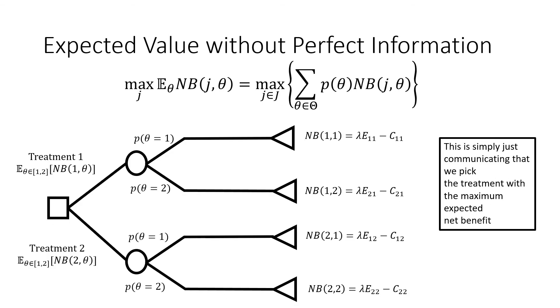Now this next term, the expected value without perfect information, is seen as a regular decision tree where we have our decision node followed by our chance nodes. This is a well-defined decision tree with our terminal values being each of these net benefits. Our task is to pick the treatment with the highest expected net benefit on each of these nodes. This is simply picking the treatment with the maximum net benefit.